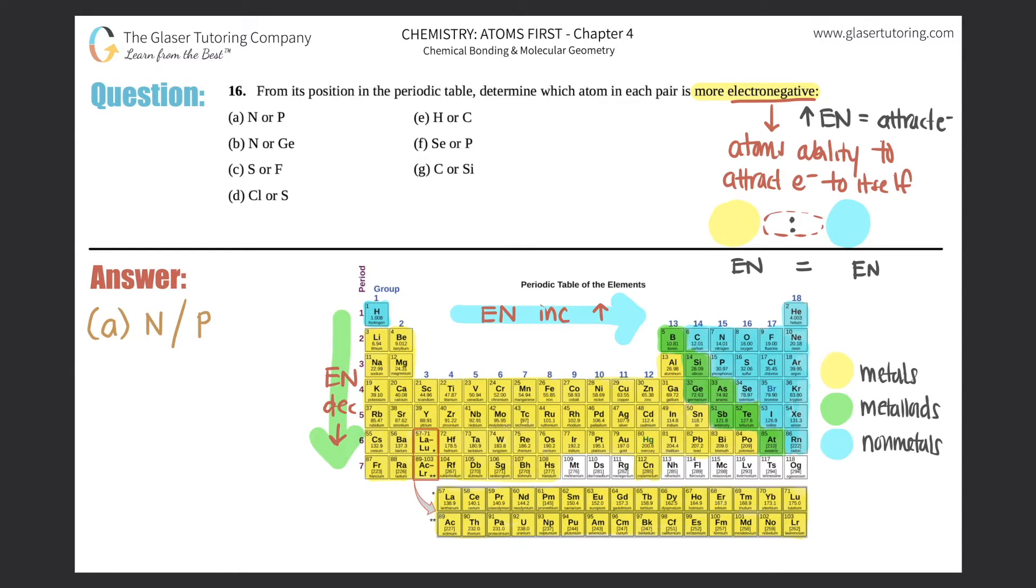So between nitrogen and phosphorus, which one would be more electronegative? Well, as you go down a group, electronegativity decreases. So which one would be more out of the two? It would be nitrogen. So nitrogen would win here. So that means that nitrogen would be able to pull electrons or attract electrons more towards itself than phosphorus would in a bond.